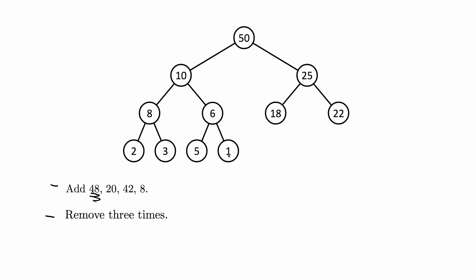Heaps are complete binary trees. The last level doesn't have to be completely full, but you have to fill it left to right. The next available leaf node to add would be here. We're going to add 48.